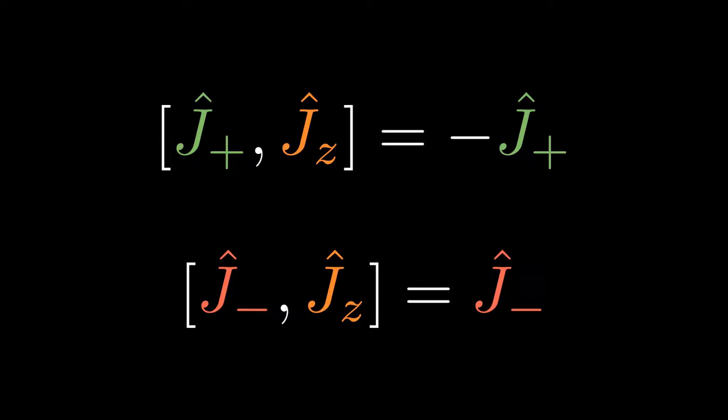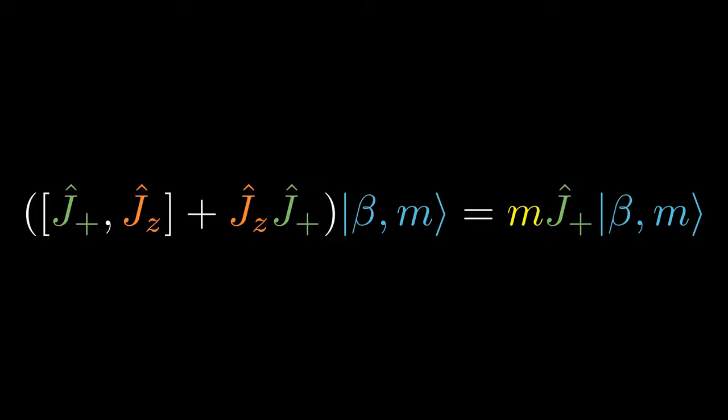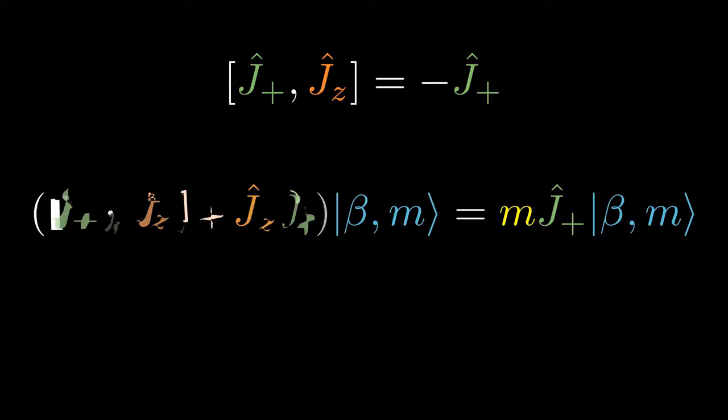Then, we evaluate the commutators involving the ladder operators. Both ladder operators commute with J². Therefore, the ladder operators cannot change the total angular momentum. But both do not commute with Jz. We are now armed with commutators and are finally prepared to extract the spectrum. Using the raising operator, the procedure is as follows. Apply the raising operator on both sides of the eigenvalue equation of Jz. J+ passes through the number m by linearity on right-hand side. On left-hand side, J+ can be swapped with Jz if we add in a commutator, substitute the previously evaluated commutator and rearrange to get this final equation.